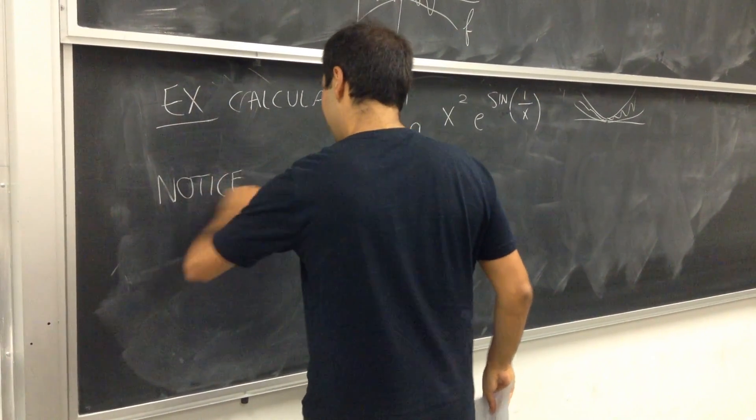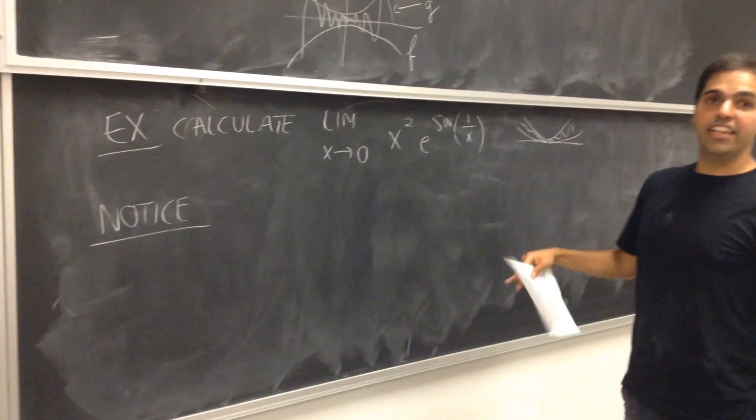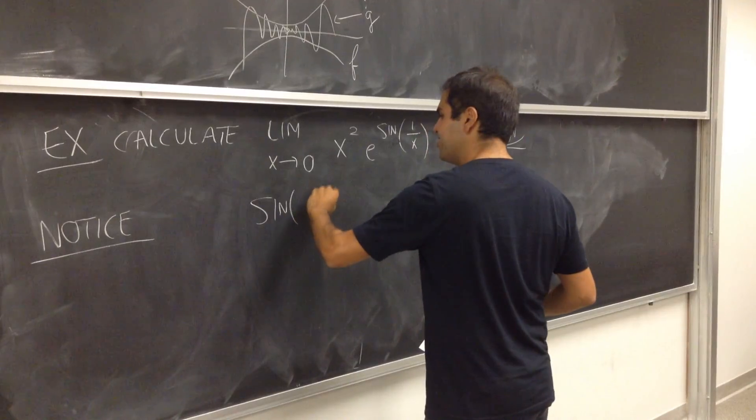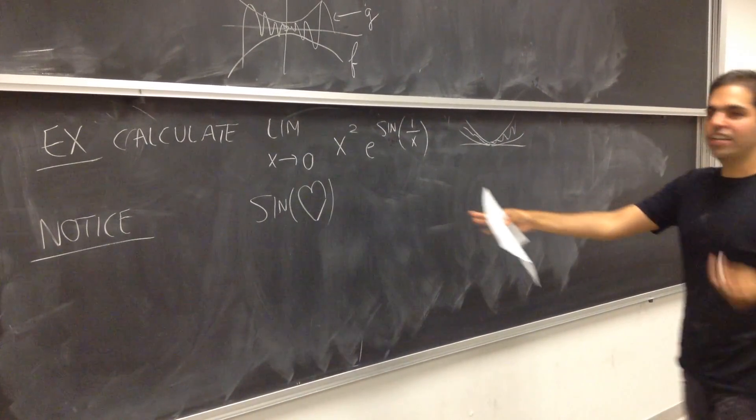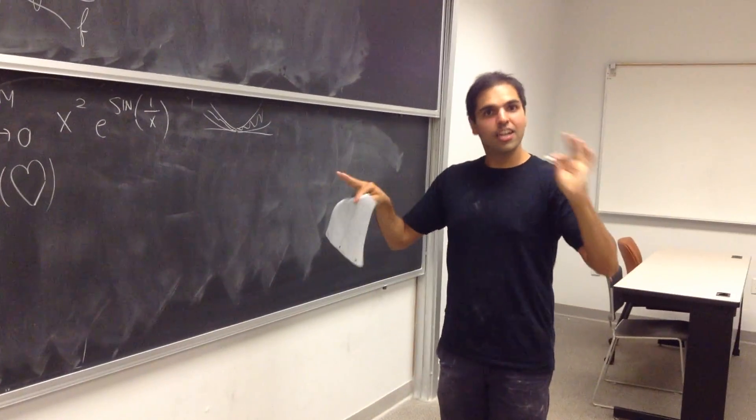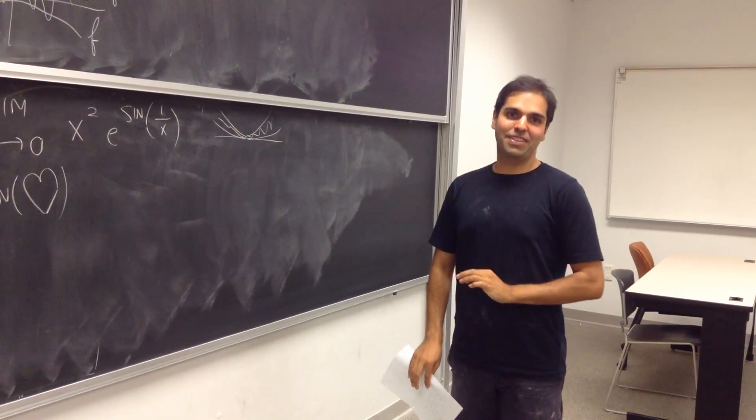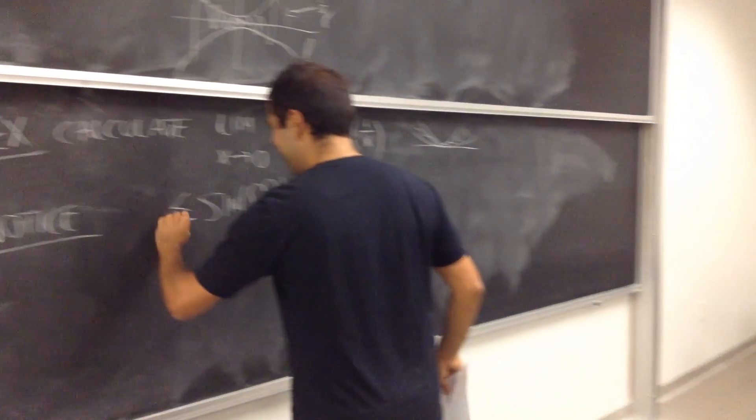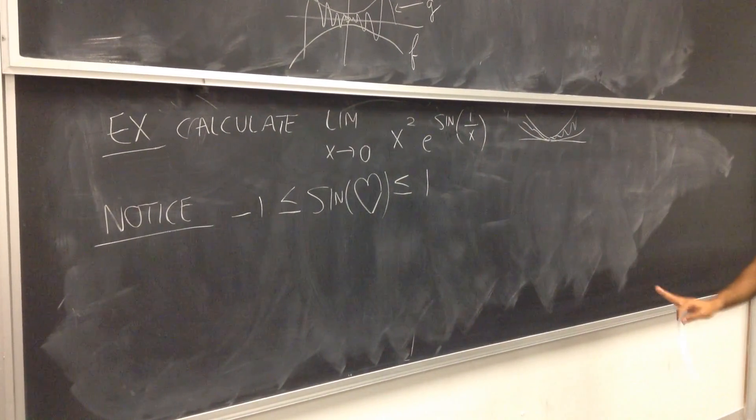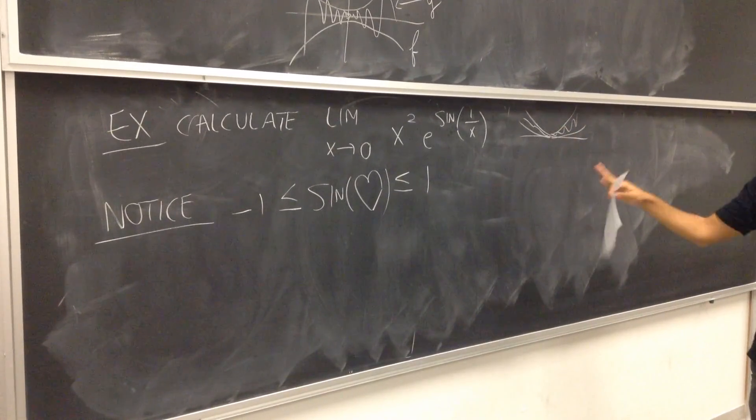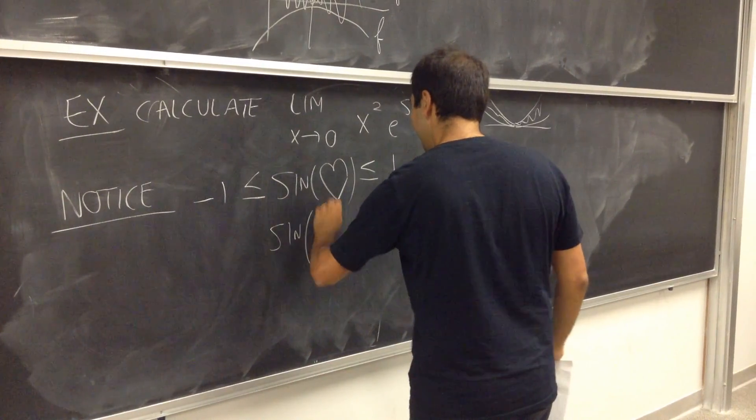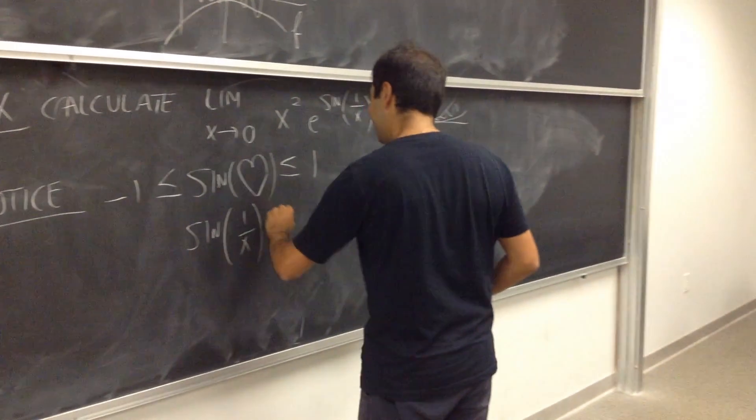Well, notice, notice that sine of anything is always between minus one and one. So, I think there was an xKCD video that says, what is sine of love? Well, I don't know what sine of love is, but one thing I do know is that it's between minus one and one. So, sine of anything is between minus one and one. So, in particular, sine of one over x is between minus one and one. So, love is one, one over x, okay?